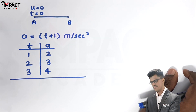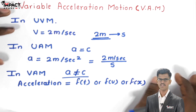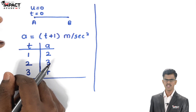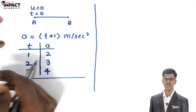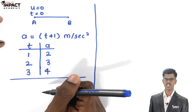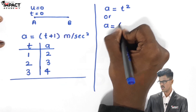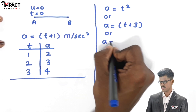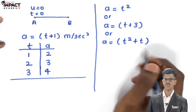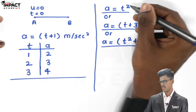In uniform acceleration motion we have three equations — three Newton's equations of motion — so we can calculate displacement, velocity and acceleration from those equations. But here in variable acceleration motion there are so many possible motion equations. Maybe acceleration equals T squared, or T plus 2, or T squared plus T. There are so many equations, so we can't derive each equation individually.